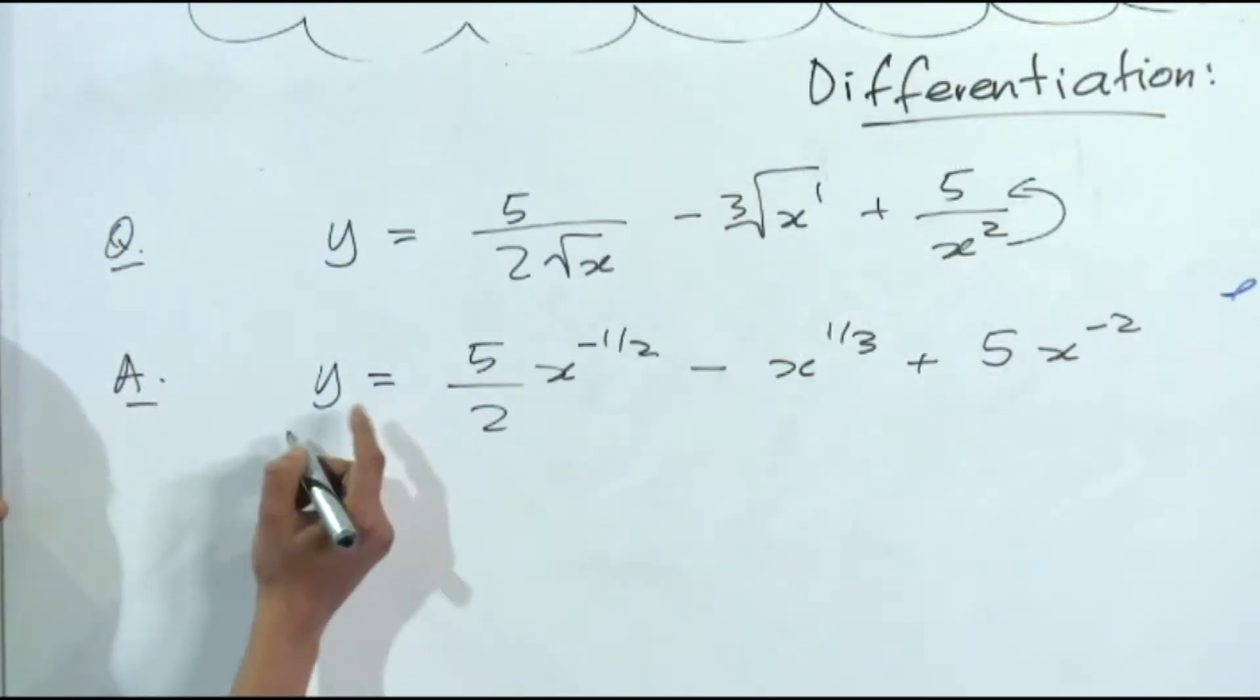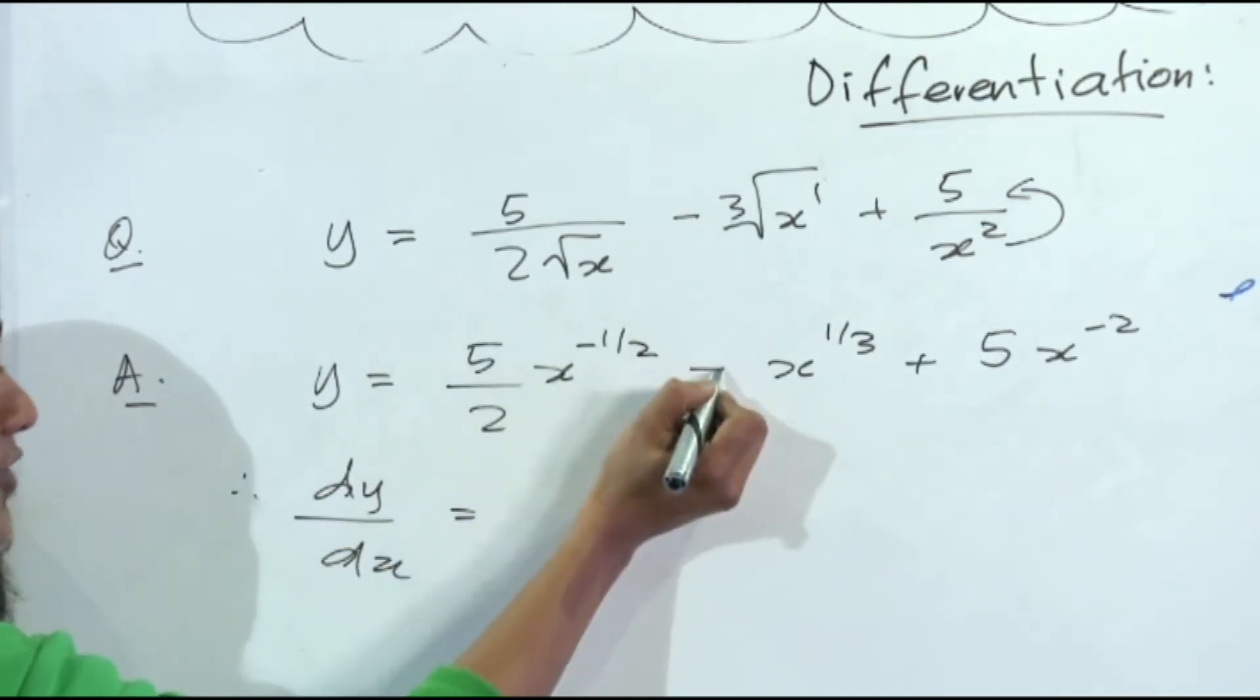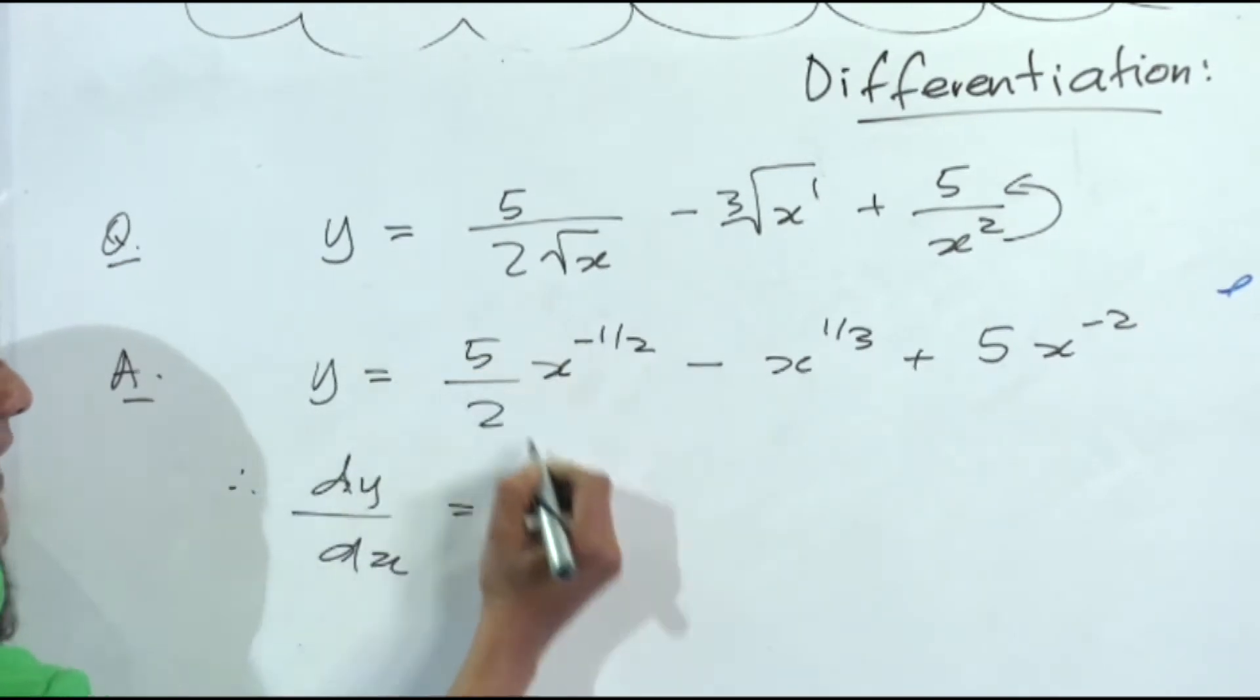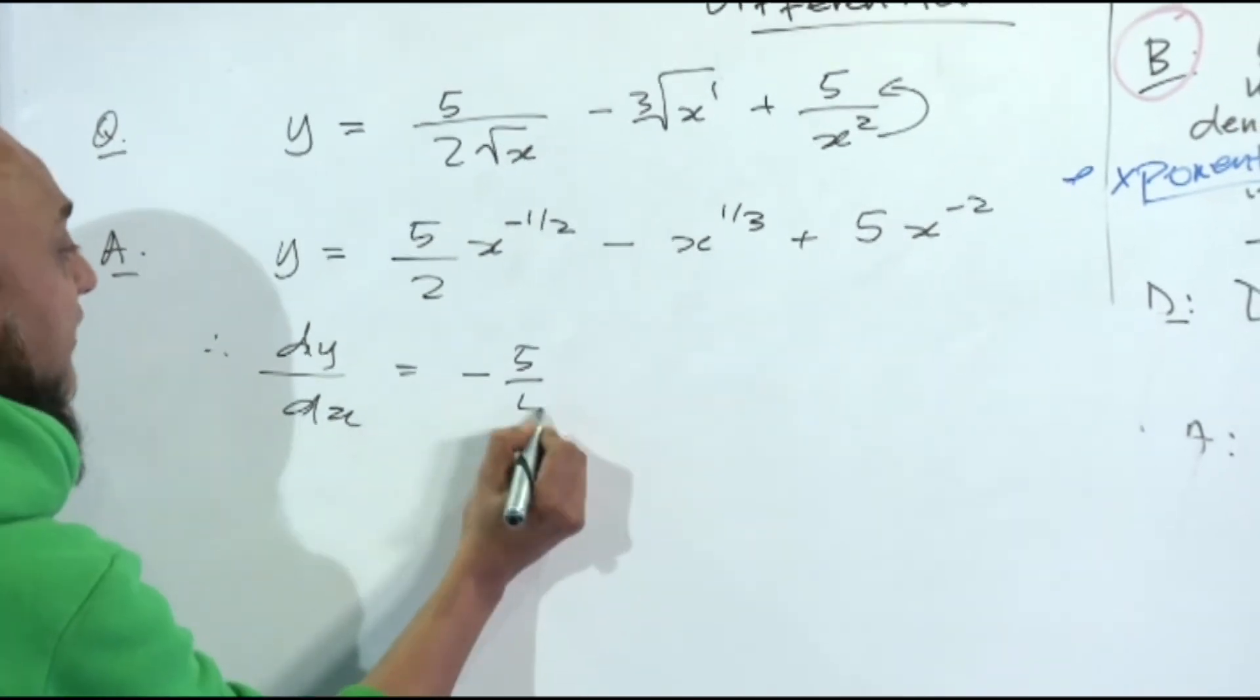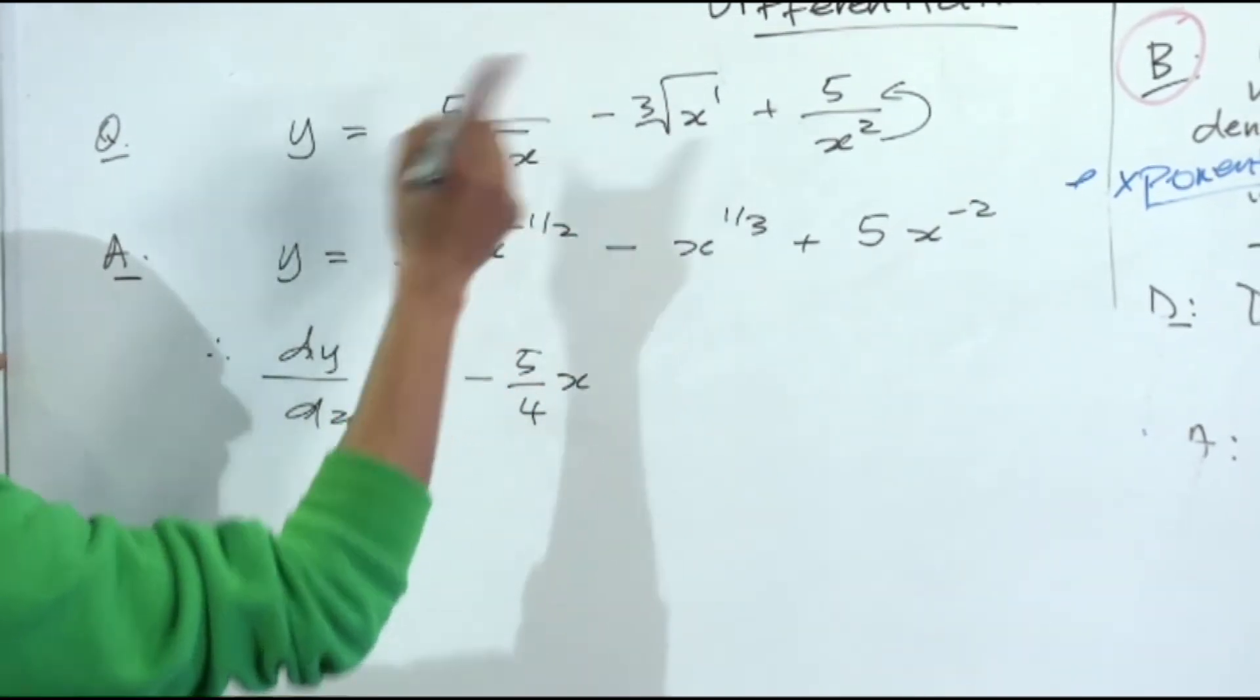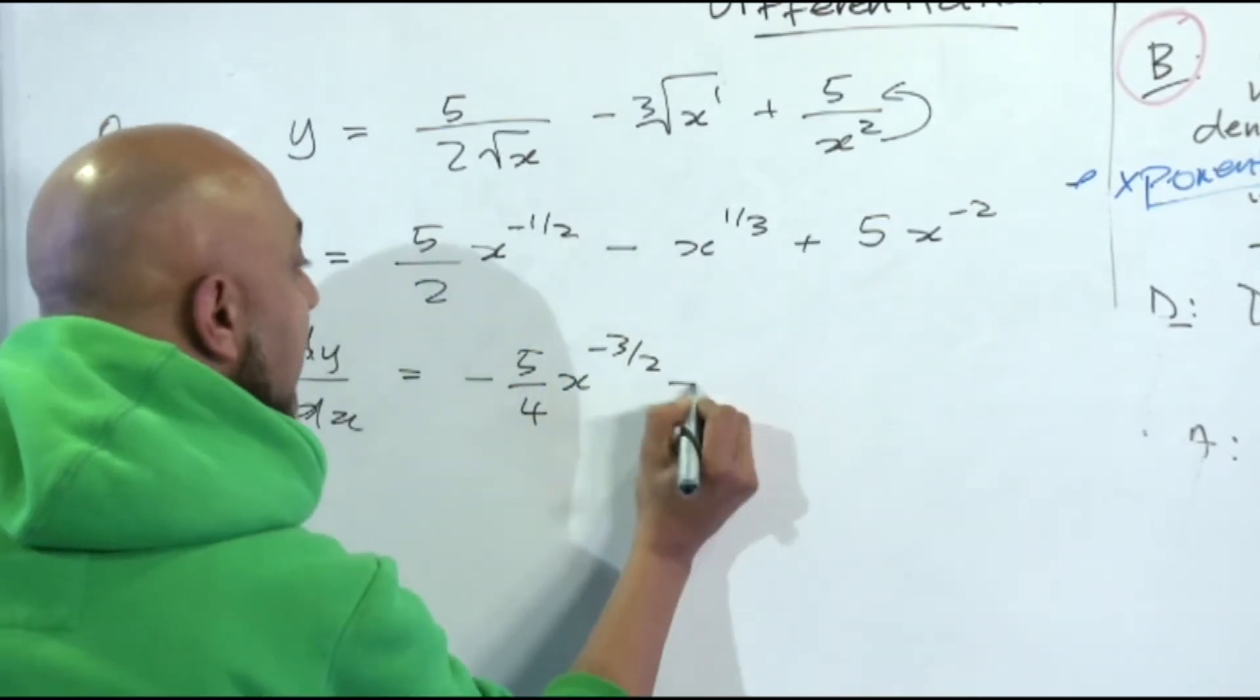Let's now find the derivative. Therefore dy over dx is equal to power times coefficient minus 1 from power. Negative times positive is negative. We've got 5 over 2 times half is 5 over 4, x to the power minus half minus 1 is minus 3 over 2.